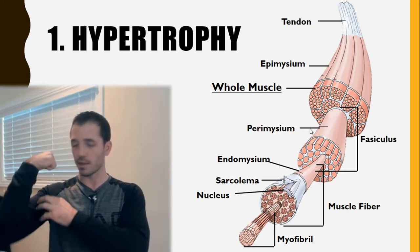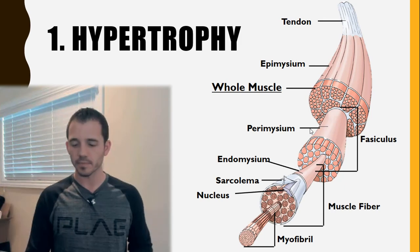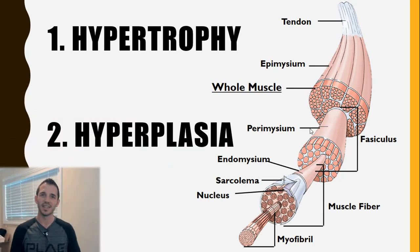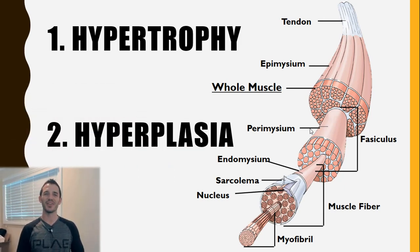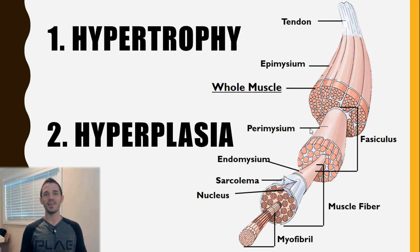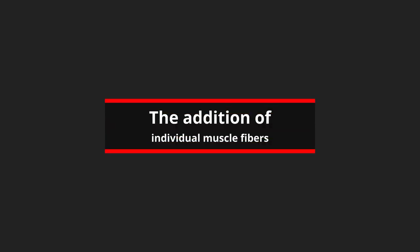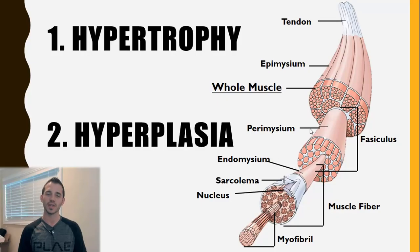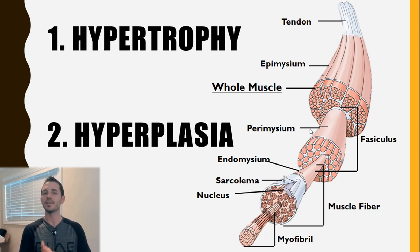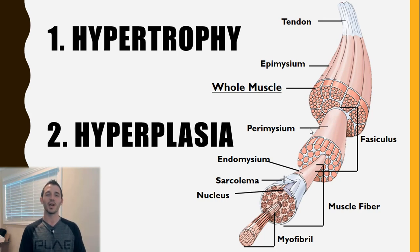The only other thing that could make the bicep as a whole bigger would be hyperplasia. We'll talk about this in a separate video — I have some very controversial views on that — but that would be the addition of individual muscle fibers themselves. Most people are going to tell you hyperplasia doesn't happen, and it probably doesn't under normal circumstances that much. Maybe if you're nice to me, I'll make a separate video explaining my views on hyperplasia. But for now, let's disregard it.